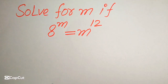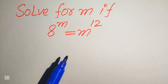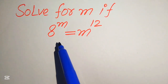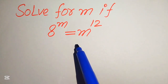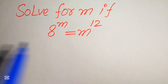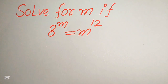Hello everyone, today I want to show you how to solve this problem for the values of m, if we have 8 to the power of m equals to m to the power of 12. We solve this problem for all the values of m. I hope you like this method, but if you have any other method in mind, please don't hesitate to write it into the comment section.